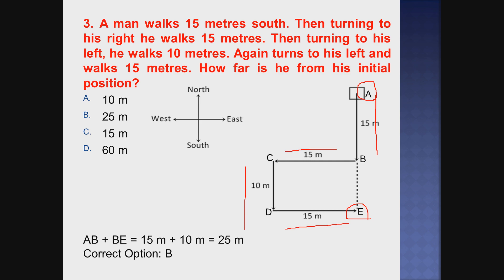We don't know the exact distance of BE directly - so how do we find it? CD is parallel to BE. That's why, since C to D is 10 meters, obviously B to E is also 10 meters. So AB is 15 meters and BE is 10 meters. Adding both, from A to E is 25 meters. Therefore the correct option is B.